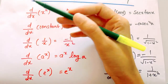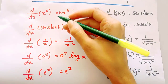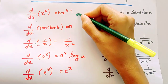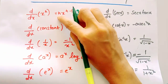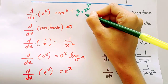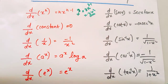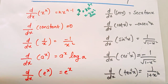Let's take a look at d by dx of x raised to n. The formula gives us n into x raised to n minus 1. For example, for x raised to 3, n is 3, so the derivative is 3 times x raised to 3 minus 1, which is 3x squared. This formula applies to any polynomial derivative. This is a very important equation.